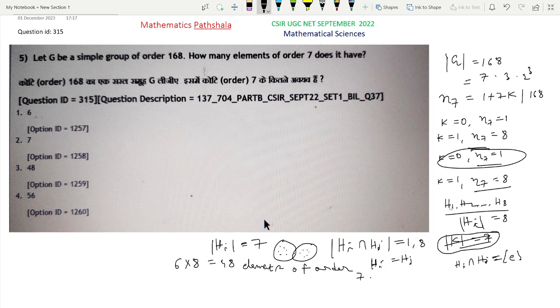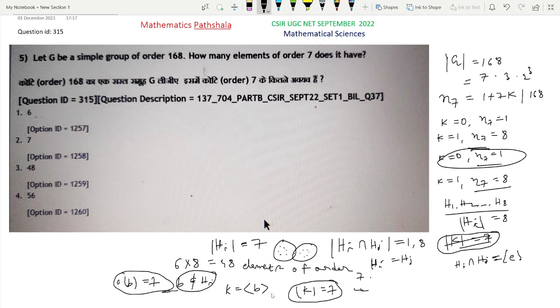For these 8 subgroups, there are 48 elements of order 7. If there is any other element, say B, such that order of B equals 7 and B does not belong to any HI, then the subgroup generated by B is a subgroup of order 7. But we already said there are no other subgroups of order 7, so such B does not exist. These elements belonging to the 8 subgroups of order 7 are the only elements of order 7. There are no other elements of order 7. So there are exactly 48 elements of order 7 in this group.